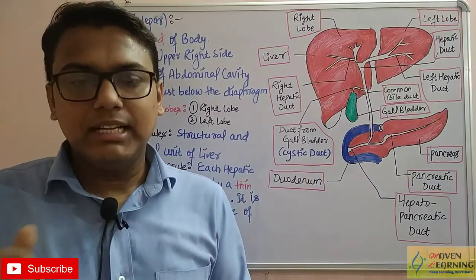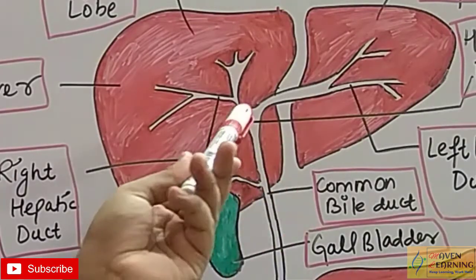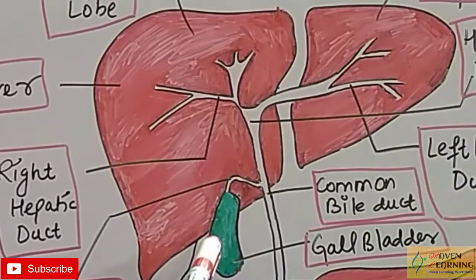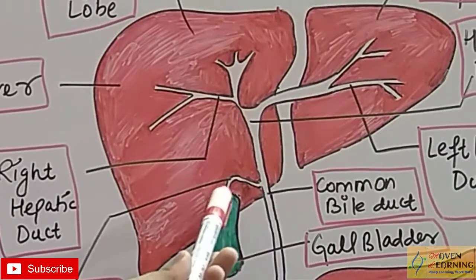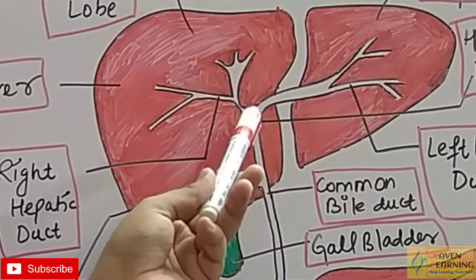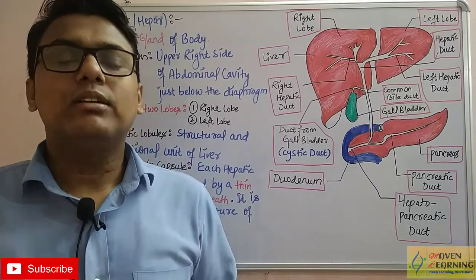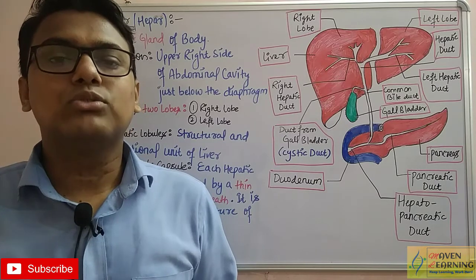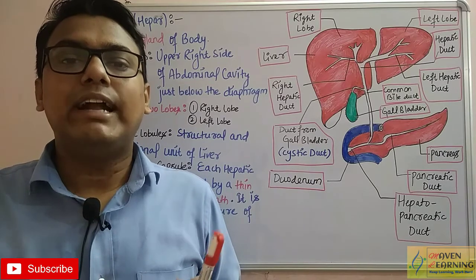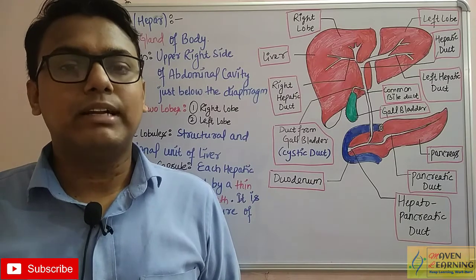The gallbladder's main function is to store bile and concentrate it. The bile's function is to emulsify fat — we will discuss this in detail when we cover digestion of food. The duct coming from the gallbladder is called the cystic duct — this is a very important question that appears in exams. The liver duct is the hepatic duct, and together the hepatic duct and cystic duct join to form the common bile duct.